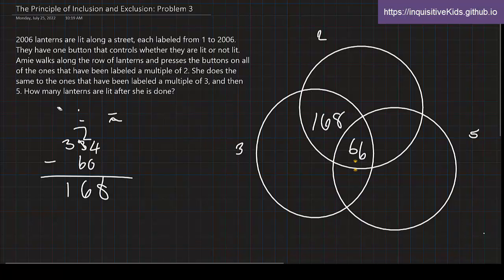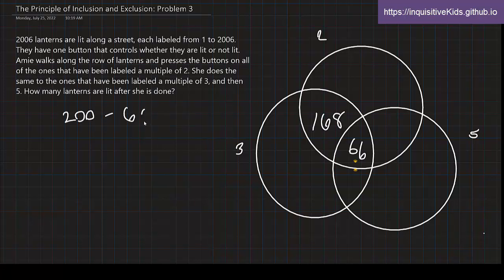Now we do the same to the other regions. You can pause the video if you want to do it yourself. The same we do with 2 and 5. 2 and 5, that's 10. And 2006 divided by 10, the closest multiple is 2000. 2000 divided by 10 is 200. Subtract 66 from 200, and we get 134. So this is 134.